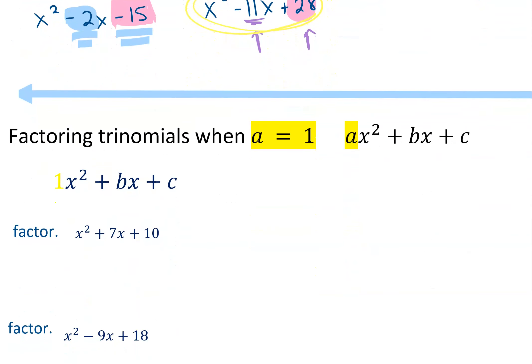The trinomials we factor today are trinomials where a is equal to 1, meaning the coefficient of x squared is just 1: 1x squared plus bx plus c. We'll have other lessons where we discuss what to do if a doesn't equal 1, but for all of the ones we're doing today, a is going to be equal to 1.